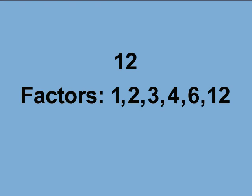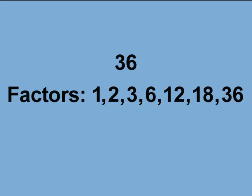Now do the same factor pairs with the factors of a square number. Let's look at 36: 1, 2, 3, 6, 12, 18, 36. 1 times 36 is 36. 2 times 18 is 36. 3 times 12 is 36. 6 times 6 is 36. In the last case, 6 is a factor twice, but it only appears once on the list of factors. This is why square numbers have an odd number of factors.